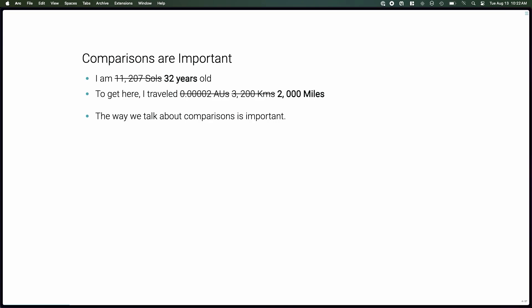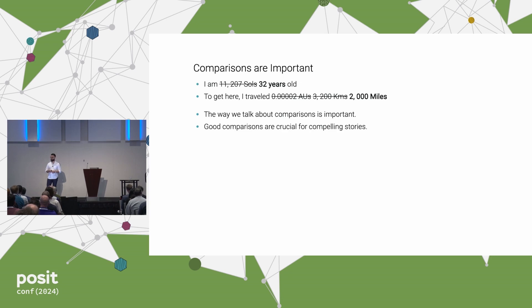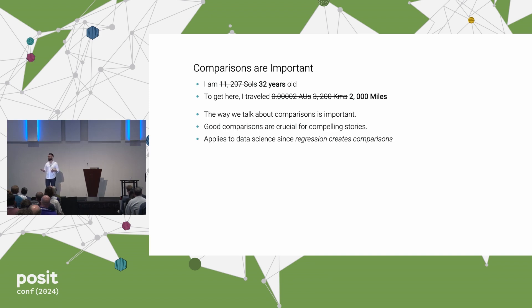The same is true of the astronomical unit. When I say 2 times 10 to the minus 5, that sounds like a short distance, unless you know that the astronomical unit is the distance from Earth to the Sun. So the way in which we talk about comparisons really matters, because good comparisons are crucial for telling compelling stories. And we, as data scientists, do nothing if not make comparisons and tell compelling stories. In fact, some of the tools that we use in pursuit of that goal, like regression, are just mini-machines for creating comparisons.